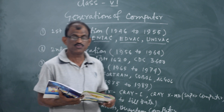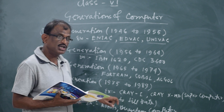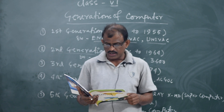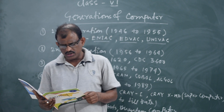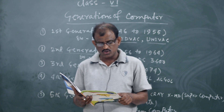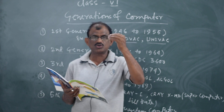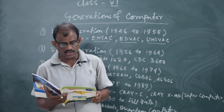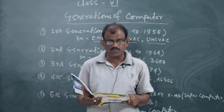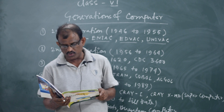The fifth generation began in 1990. In fifth generation computers, VLSI technology was replaced with ULSI — Ultra Large Scale Integration — making possible the production of microprocessor chips with 10 million electronic components.